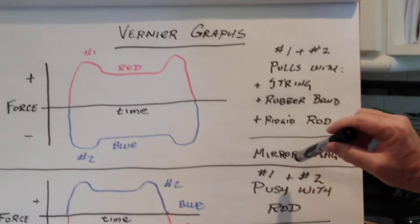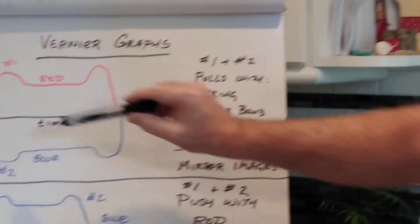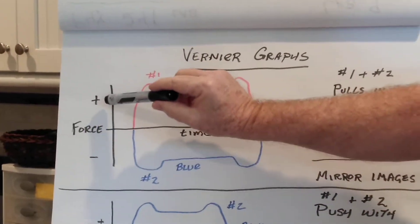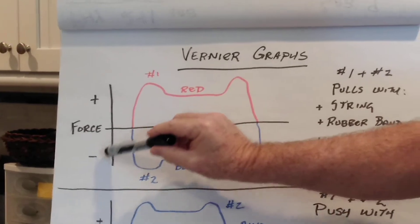We got mirror images of each other, the red and the blue. So, force positive equals force negative.